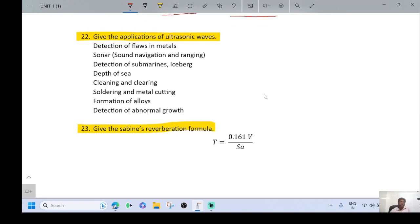Final question: Give the Sabine reverberation formula. The reverberation time T equal to 0.161 V divided by S into A. Here V equal to volume of the hall, S surface area, A absorption coefficient.